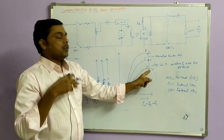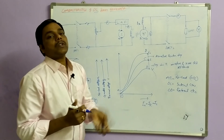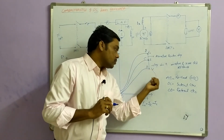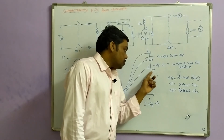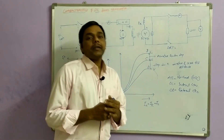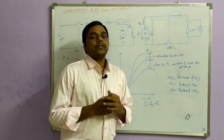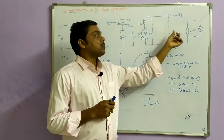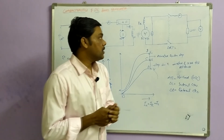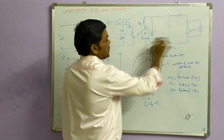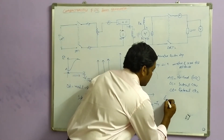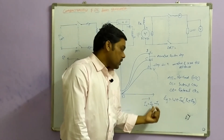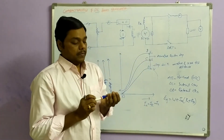The load voltage also starts increasing since armature current, series current, and load current are all the same, so the curve will be like this. Now at this point your voltage remains the same, but after this point, if you further increase the load, the voltage starts to drop. Now what is the reason for this voltage decrement? We know the relation for voltage and generated EMF: EG is equal to V plus IA × RA plus RAC.